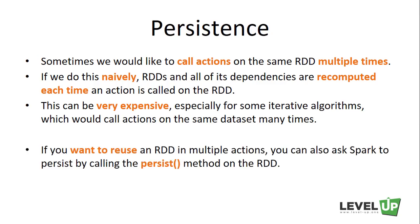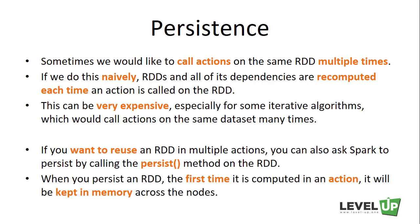If you want to reuse an RDD in multiple actions, you can ask Spark to persist it by calling the persist method on the RDD. When you persist an RDD, the first time it is computed in an action it will be kept in memory across the nodes. This allows future actions to be much faster, often by more than 10 times. Caching is a critical tool for iterative algorithms and fast interactive use.